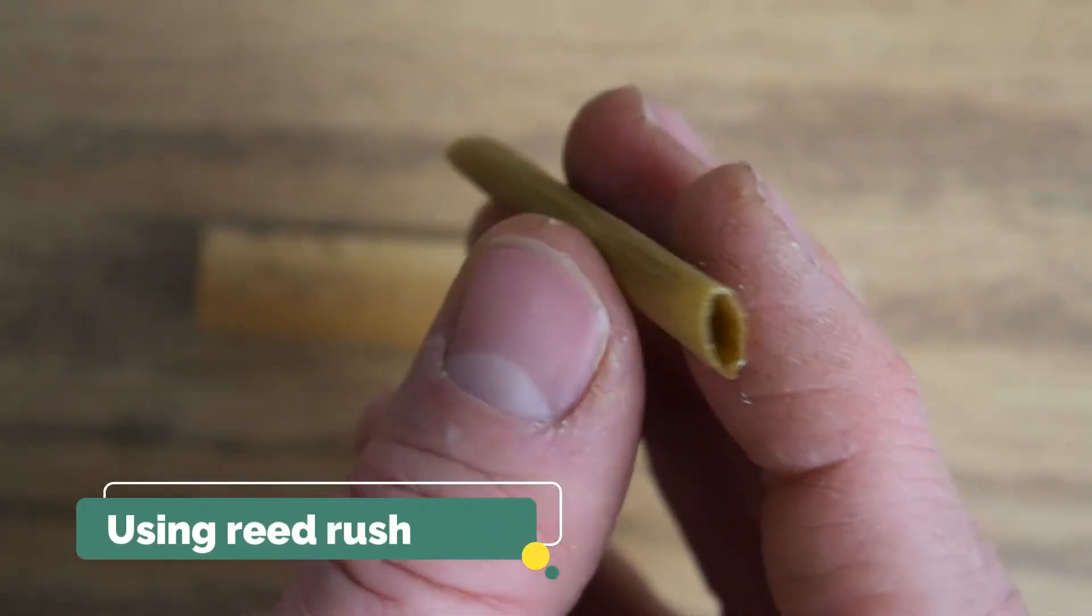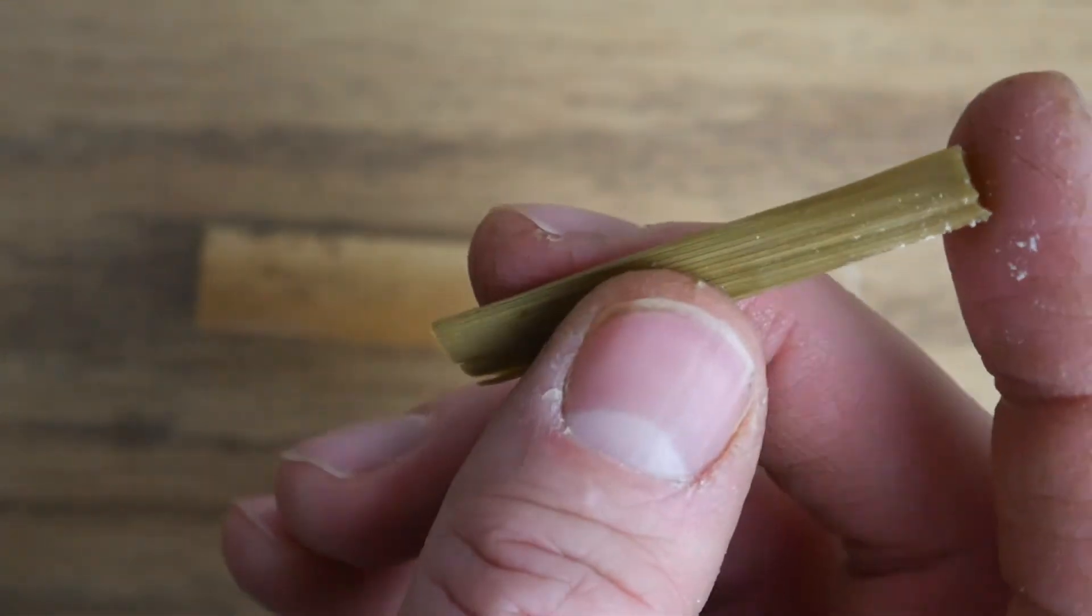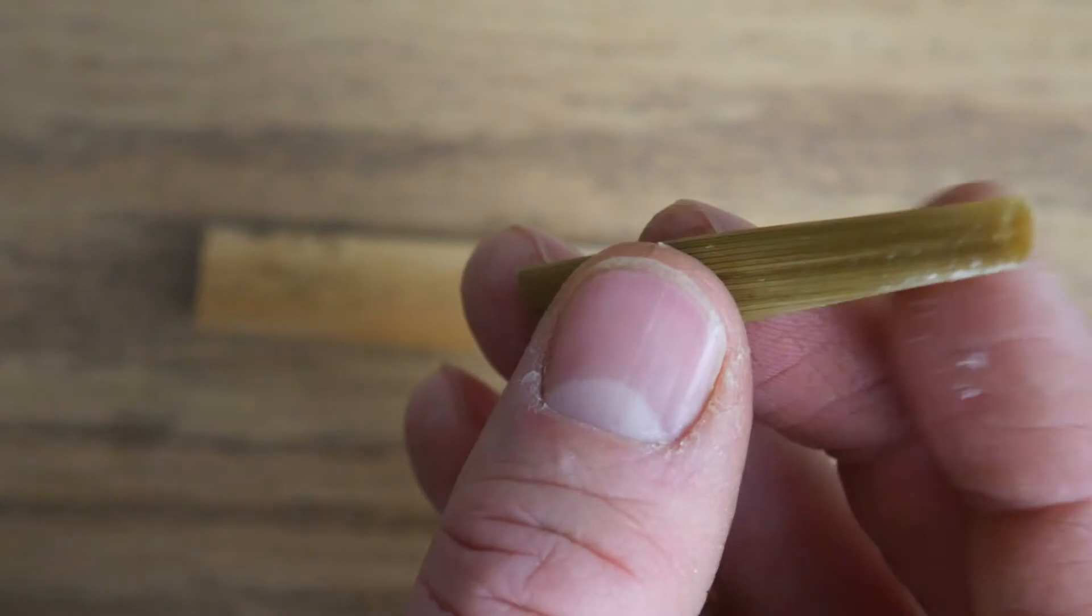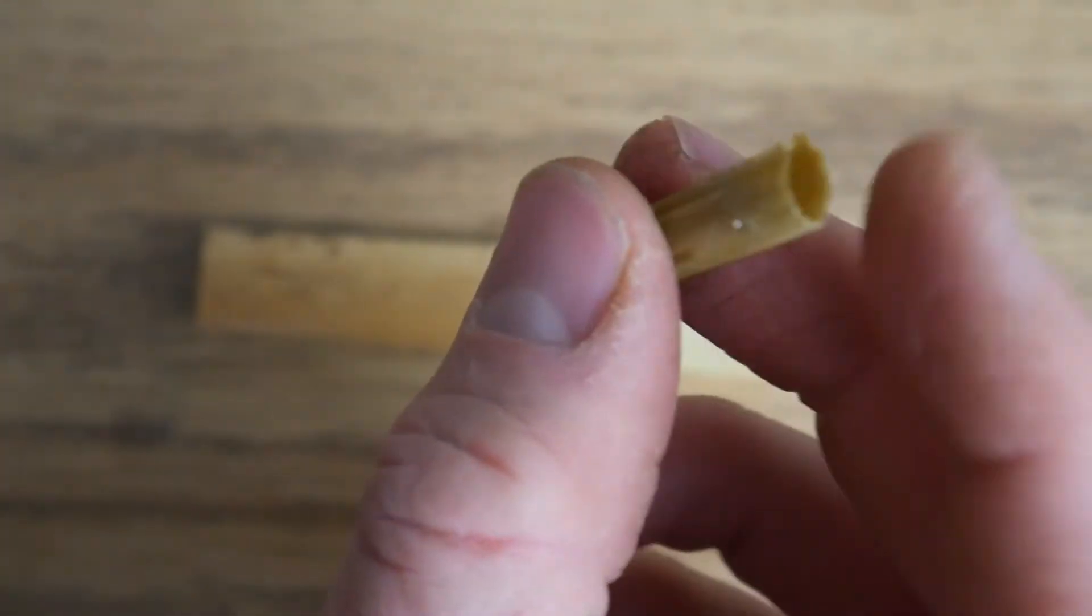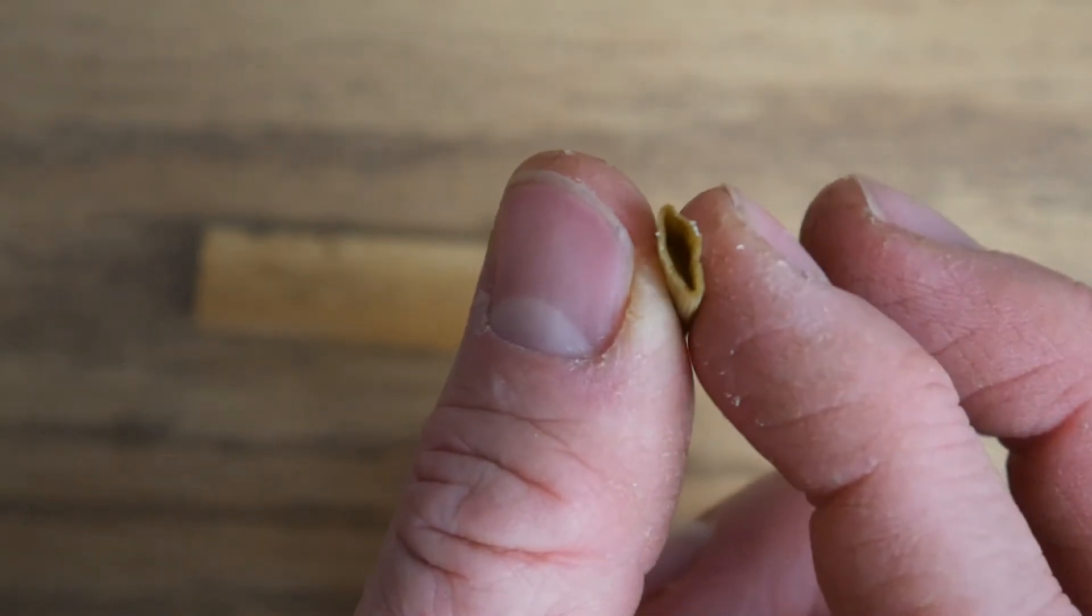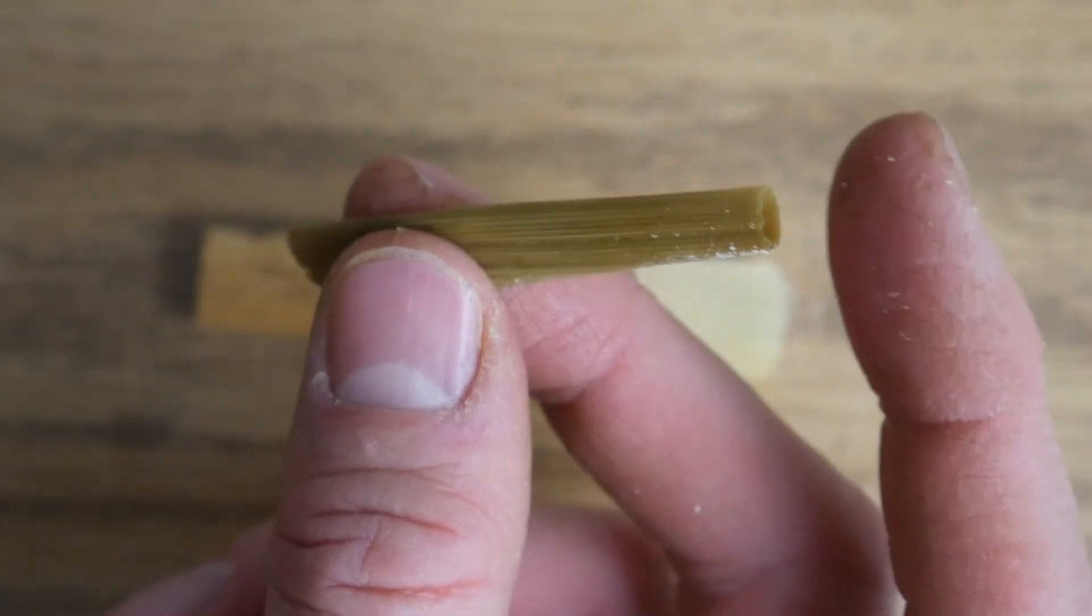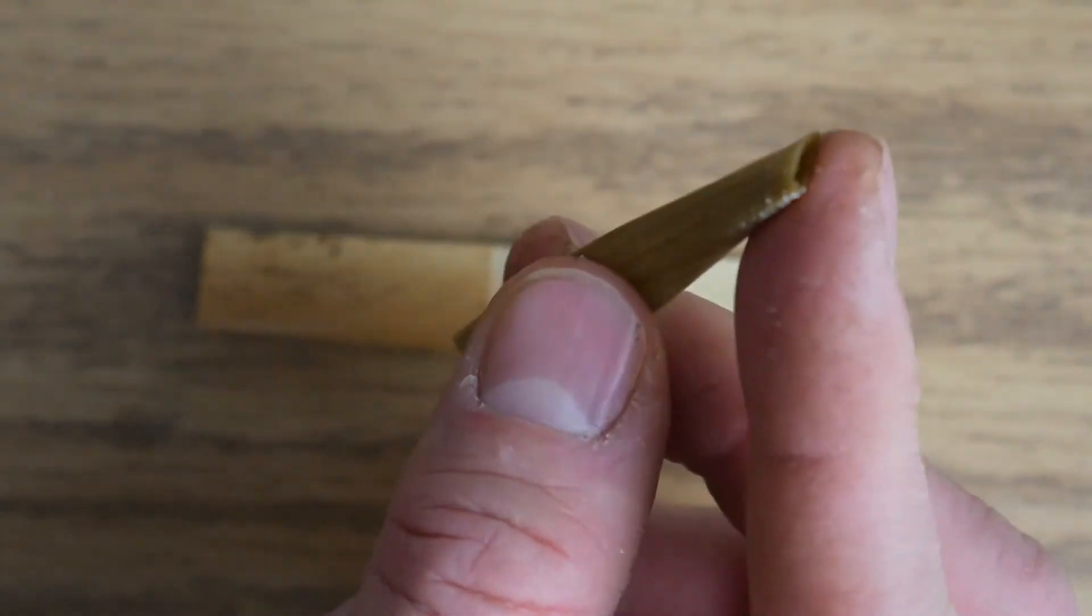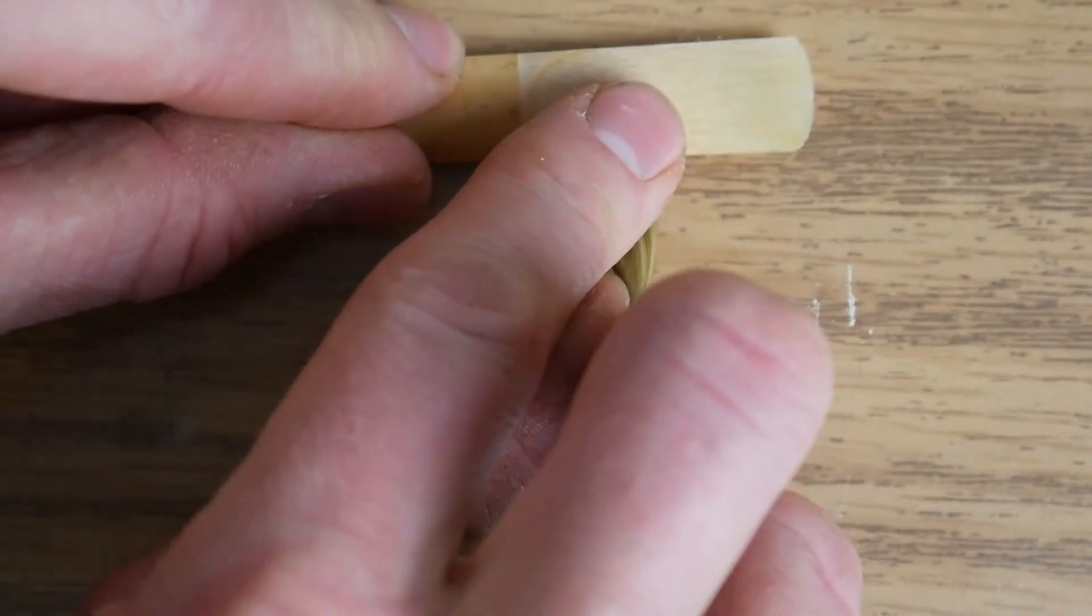You can find reed rush or dutch rush growing along many rivers, or you can buy commercially produced versions. To use it as a sanding device, soak it in water for about a minute until it's pliable. Grip it between your middle finger and your thumb, and then flatten the side with your index finger. This creates a nice sanding surface to use on the vamp.